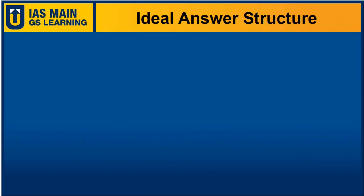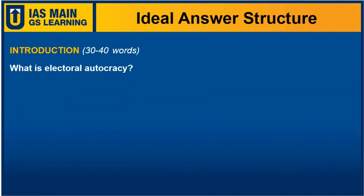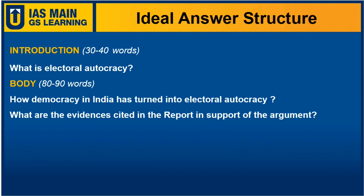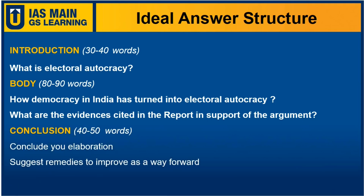You can structure your answer by first introducing what is electoral autocracy in 30–40 words. In the body part, you can discuss how democracy in India has turned into electoral autocracy, and what are the evidences cited in the report in support of the argument. In the conclusion part, you can conclude your elaboration as per the report and suggest some remedies to improve upon the situation as a way forward.